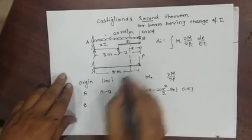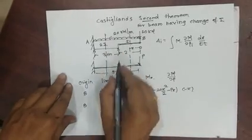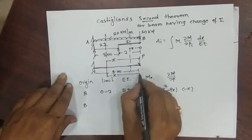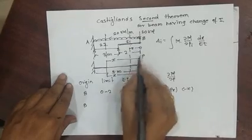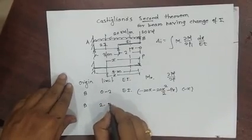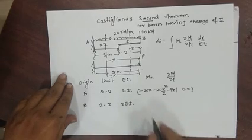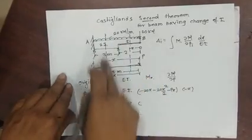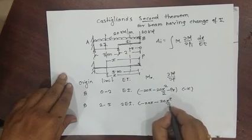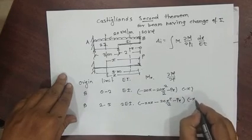We are not changing our origin; it remains at B. For the next section, due to the change in I, the limit is 2 to 5 and EI becomes 2EI. The bending moment equation for this section is M = −20x − 10x² − Px, and the partial derivative ∂M/∂P = −x.